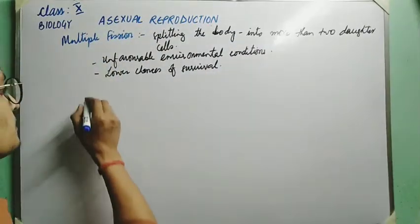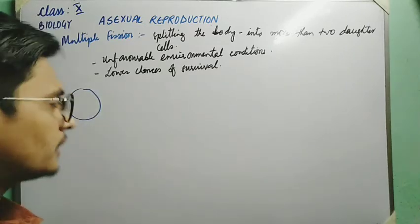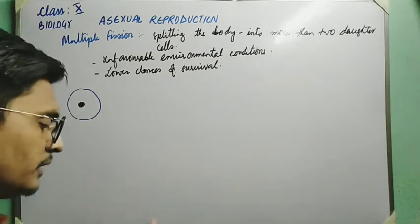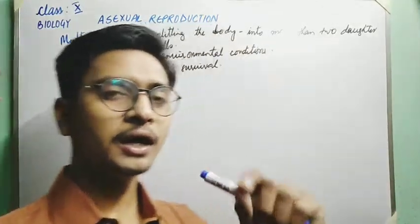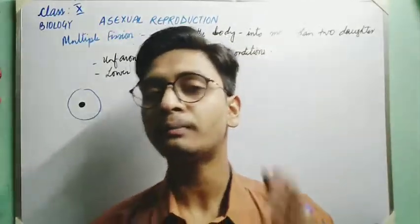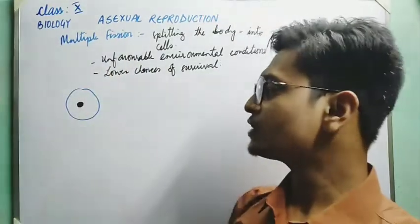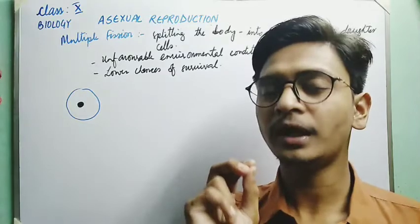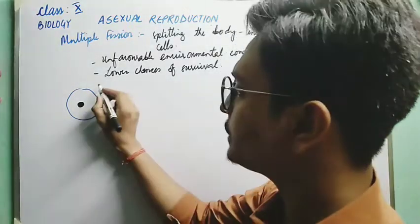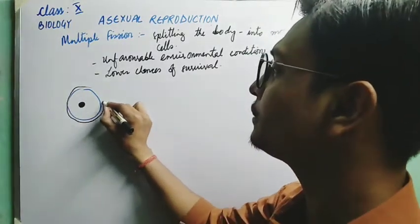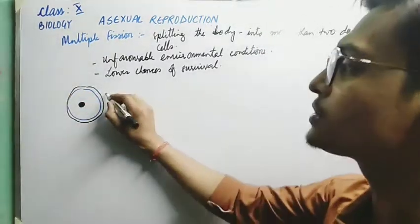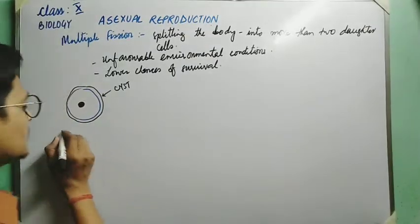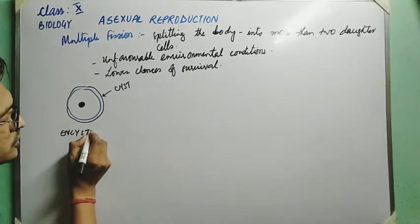In multiple fission, suppose this is the body of an amoeba with its nucleus inside. When environmental conditions are unfavorable, the amoeba develops a very hard, tough protein coat above its plasma membrane. This hard tough covering made up of protein is known as a cyst, and this process is known as encystation.